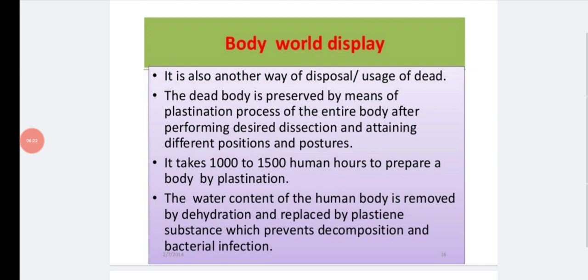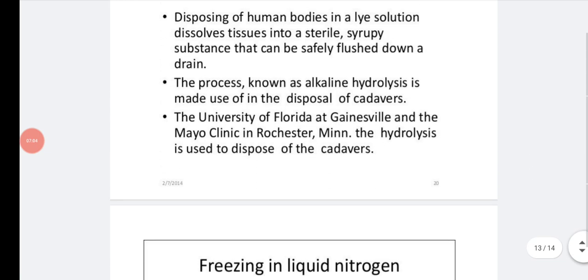Body World display is another usage of the dead body. The dead body is preserved by means of plastination — a process applied to the entire body after positioning it in desired postures. It takes one thousand to one thousand five hundred human hours to prepare a body by plastination. The water content of the body is removed by dehydration and replaced with a plastin substrate, which prevents decomposition and bacterial infection. In museums, you can see bodies standing or sitting in different positions — this is achieved by plastination.